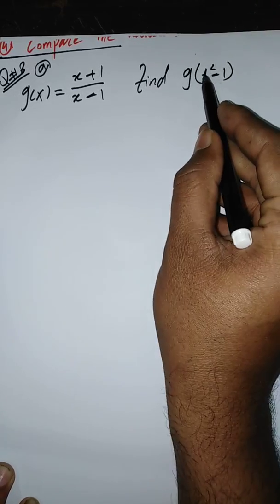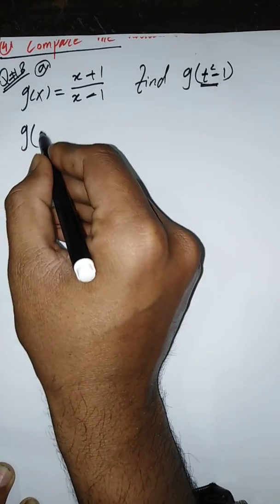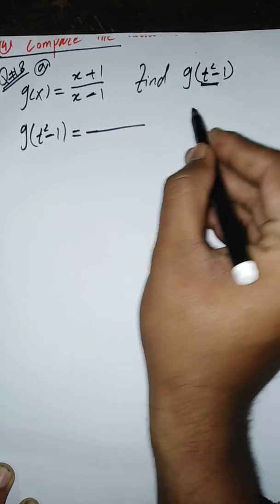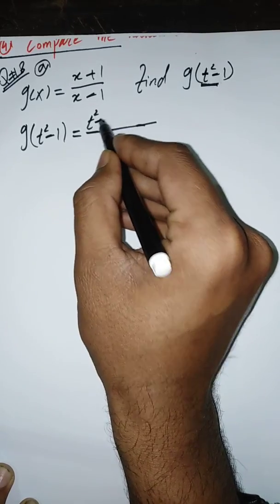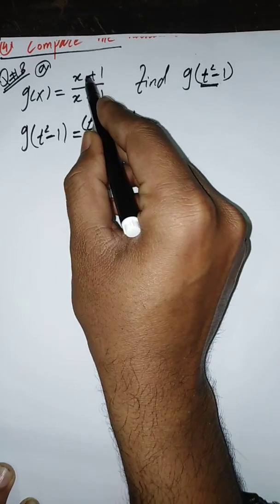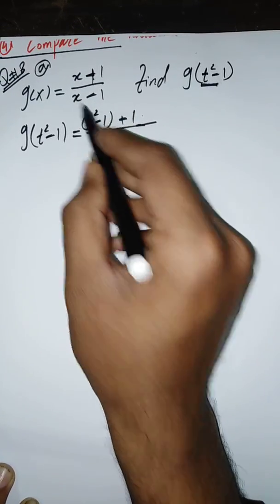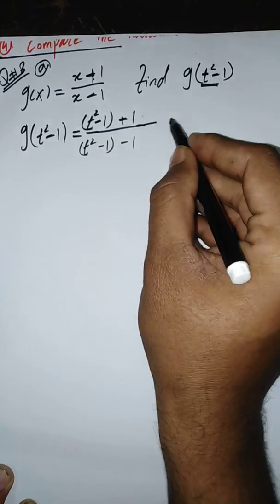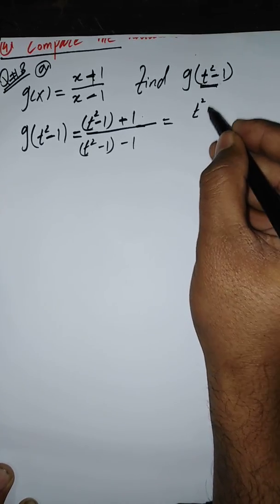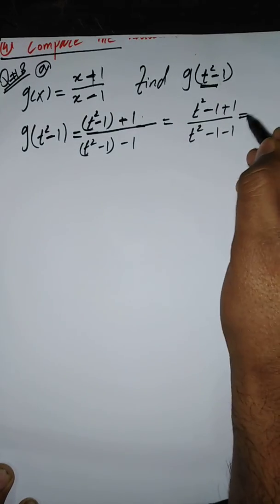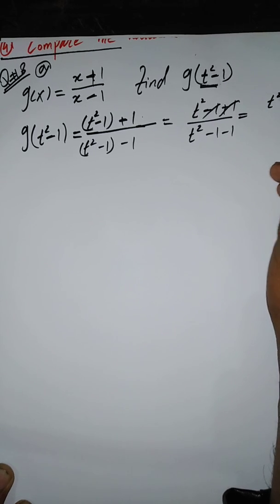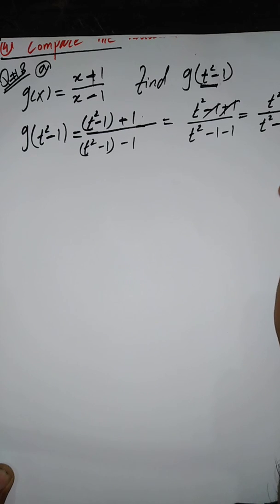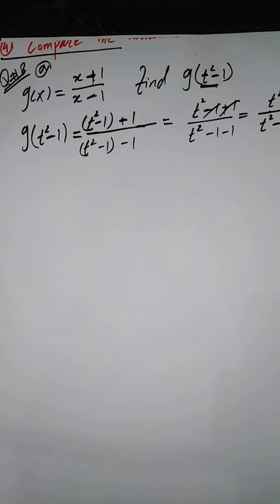Substituting x = t² - 1 into G(x): the numerator becomes (t² - 1) + 1, and the denominator becomes (t² - 1) - 1. Simplifying: -1 and +1 cancel in the numerator, giving t², and the denominator becomes t² - 2. So G(t² - 1) = t² / (t² - 2). That is our answer for question 8 part A.